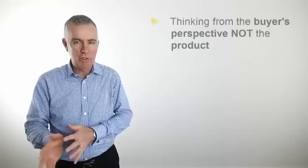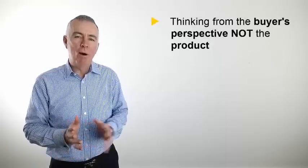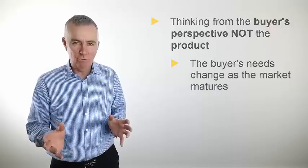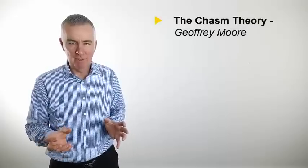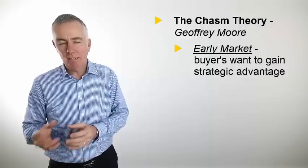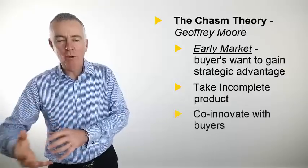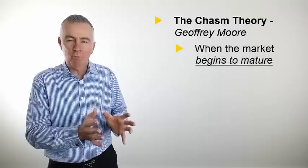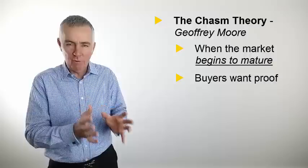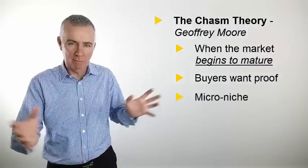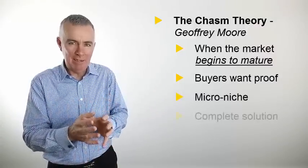It all comes down to thinking about your buyer, not your product. What does the buyer need? And it turns out that that changes as the market matures. I'm referring here, of course, to Geoffrey Moore's chasm theory, of which I'm an ardent fan. In the early market, the buyers want to gain strategic advantage. So you should take an incomplete product so that you can co-innovate with them. That's what they want. As the market matures a little bit, the next part of the market wants proof. The best way to give them proof is if they find others just like them are buying it too. So you want a micro-niche. Instead of being broad, you're now selling very narrowly and it had better be a complete solution.